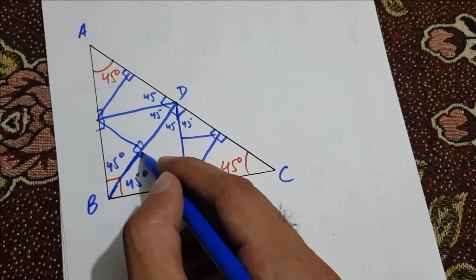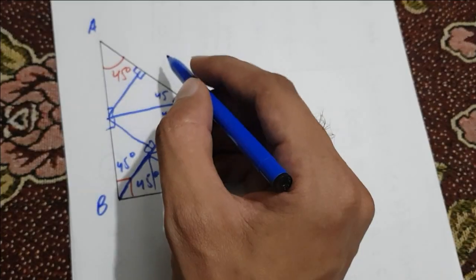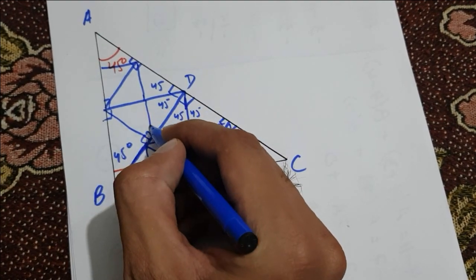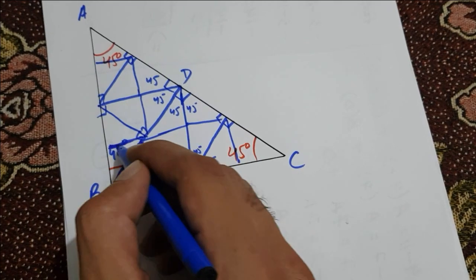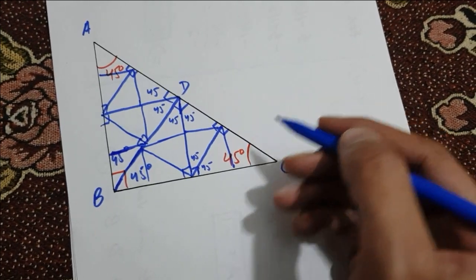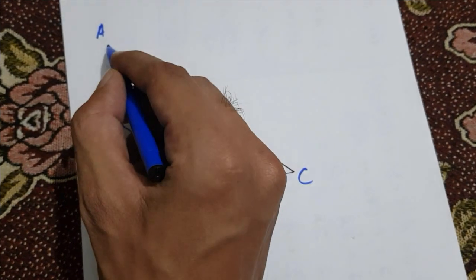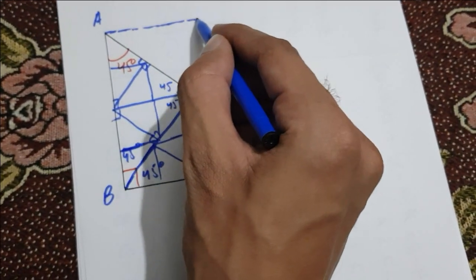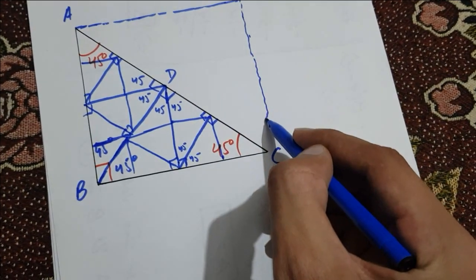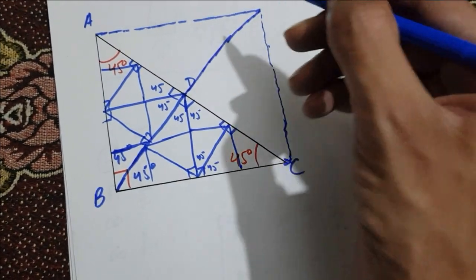We continue dividing the other right angles similarly here and here and here. In this way we get infinite right triangles within a right triangle, each of which is an isosceles right triangle. We can extend this to another right triangle here.